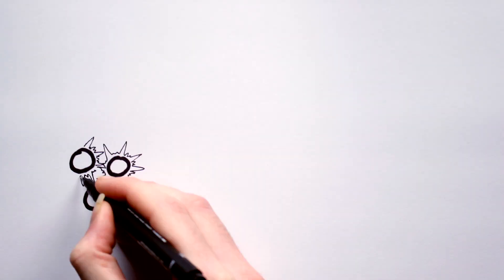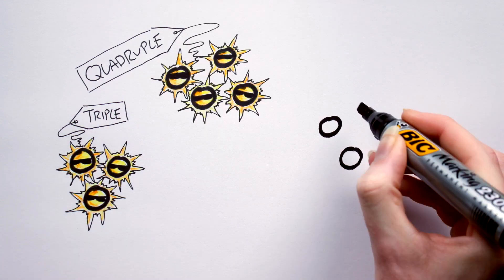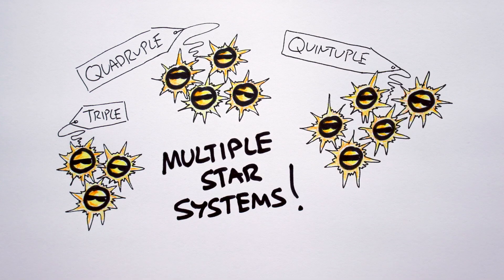Okay, so when three or more gravitationally bound stellar bodies orbit each other, we have what's known as a multiple star system.